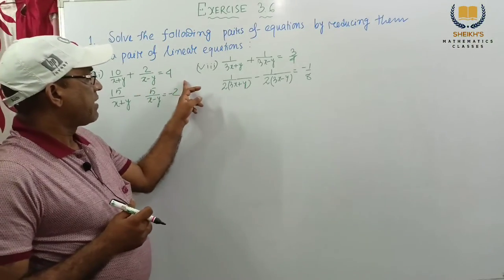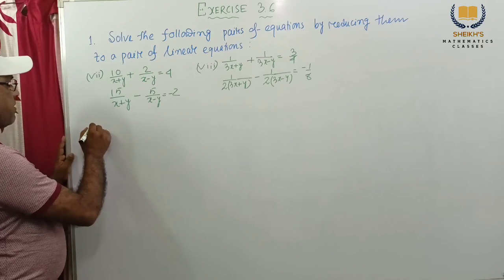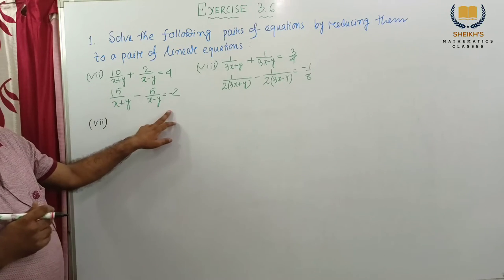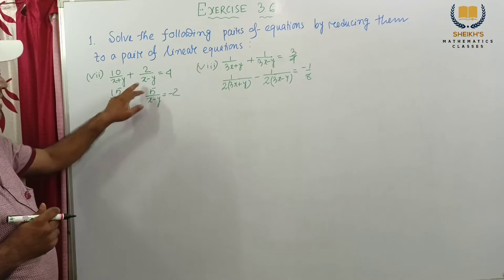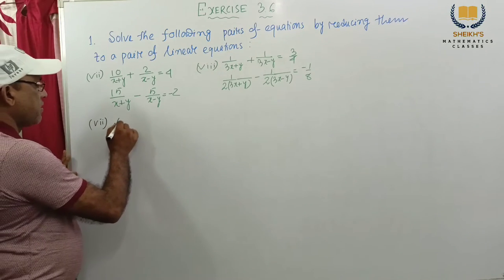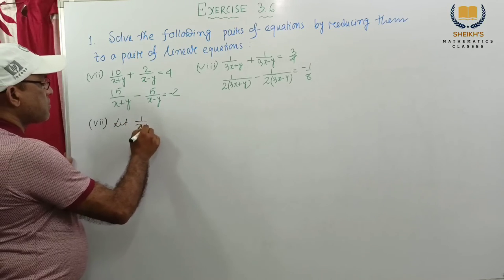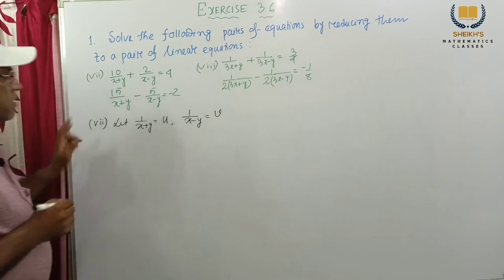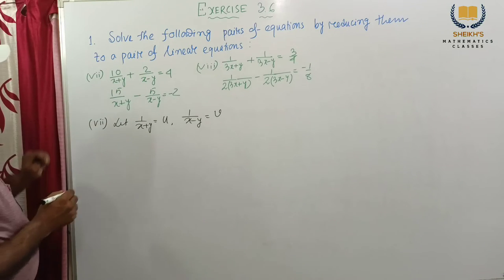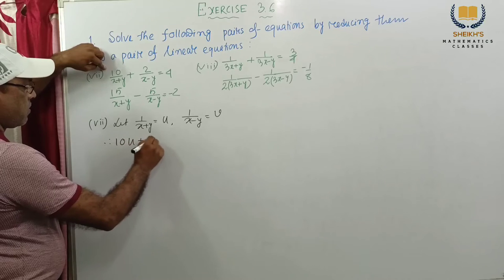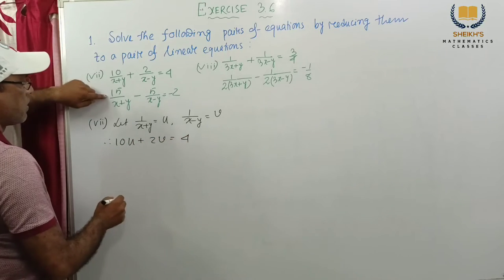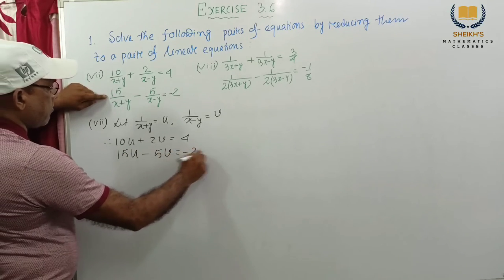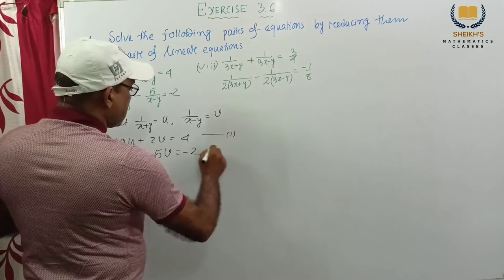Consider problem number 7 and 8. First we consider 7. In number 7, the denominator given is x plus y and x minus y. These are common: x plus y, here also x plus y; x minus y, x minus y. So let 1 by x plus y equal to u, 1 by x minus y equal to v. So we get the equations: 10u plus 2v equal to 4 — this is number 1; and 15u minus 5v equal to minus 2 — this is number 2.